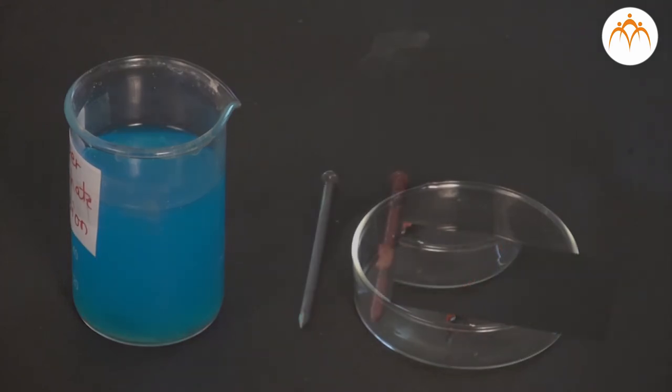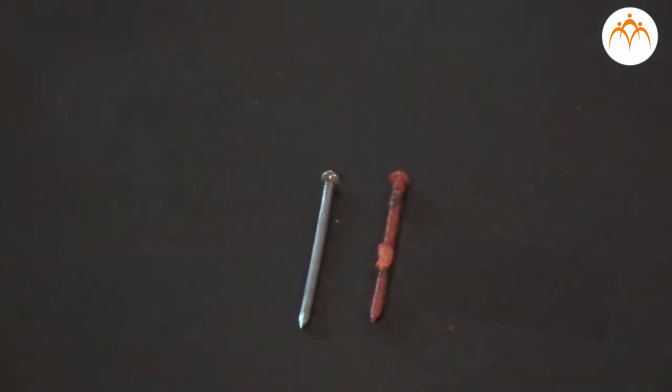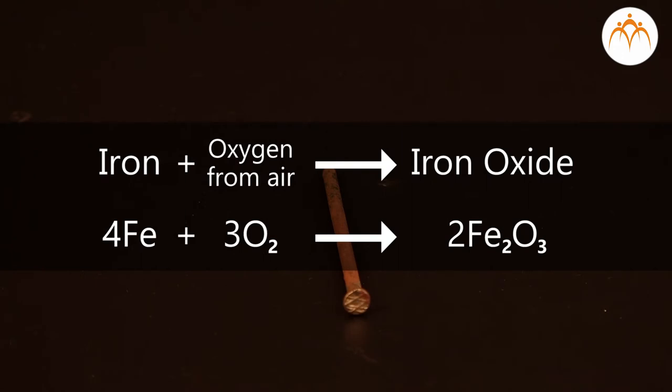Let us look at the reaction of iron with water and air. As iron reacts, it forms iron oxide as a product. If we wish to write it down, iron plus oxygen from air gives iron oxide. In chemical terms, it will be 4 times Fe plus 3 times O2 giving 2 times Fe2O3.